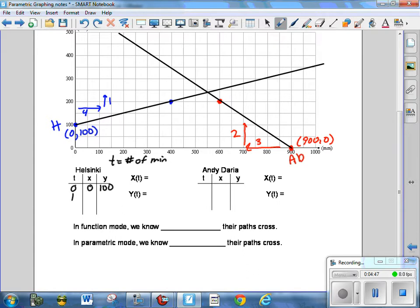The Andedoria's initial position is at 900, 0. It's moving three millimeters to the west and two millimeters to the north every minute. So if we let T represent number of minutes, we can write equations to represent these. For the Helsinki, when T is zero, where is it in the X direction? It's at zero. Where is it in the Y direction? At 100. When T is one, then now it's moved four millimeters to the right. So now it's at four in the X direction and it's at 101 in the Y direction.